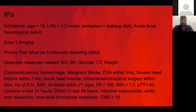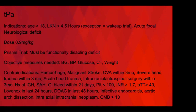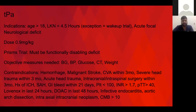TPA indications: you have to be over 18, last known normal less than 4.5 hours, and it has to be an acute focal neurological deficit. The dose is 0.9 mg/kg. Newer trials like the PRISMS trial argued that the deficit must be functionally disabling for the patient to benefit from TPA — they compared TPA versus high-dose aspirin for non-disabling strokes and found no real difference. There is a long list of contraindications, but much of it makes sense: propensity for bleeding, recent surgery or trauma, blood thinners, bleeding conditions, brain mass, or aortic arch dissection.